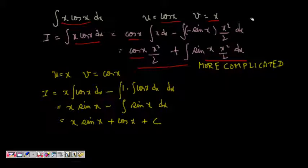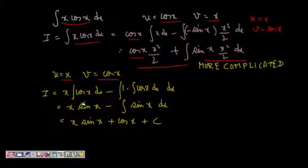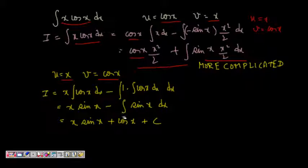So we backtrack. If instead we choose u = x and v = cos x, we get u·∫v dx = x sin x, minus ∫(du/dx · ∫cos x dx) dx = −∫(1 · sin x) dx = minus(−cos x). So the answer is x sin x + cos x, which is much simpler.